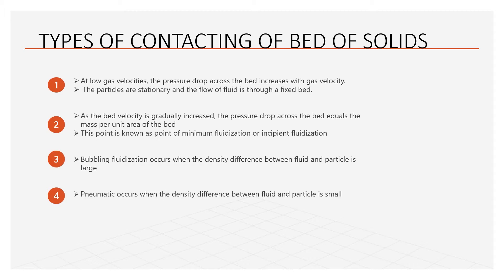The process corresponds to a situation approximately equivalent to hindered settling. During this point, the pressure drop is maximum and the force exerted by the fluid must not only act against the gravitational force of the particles but also must overcome the friction forces between the particles. Smooth fluidization starts once the particles are separated. These frictional forces drop off and the pressure drop required to maintain fluidization is less. In order for smooth fluidization to occur, the density difference between the particle and fluid should be small, which is typical of liquid fluidized beds.